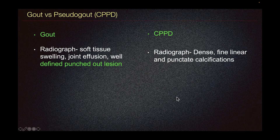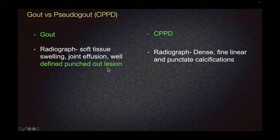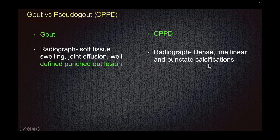Briefly, gout on radiograph will demonstrate nonspecific soft tissue swelling, joint effusion, and a well-defined punched-out lesion. CPPD, on the other hand, typically presents with dense, fine-linear, with punctate calcification.